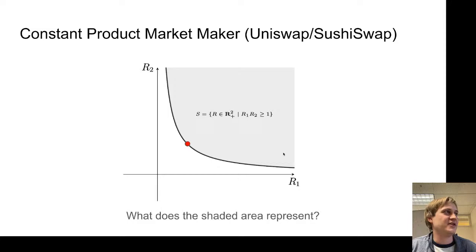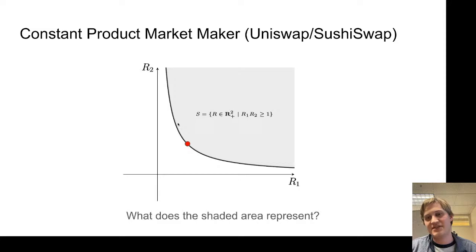You'll notice that the gray area here is a convex set — there's no sort of bend, no place where it bends inward. Any point on the edge is all to one side of this line here.